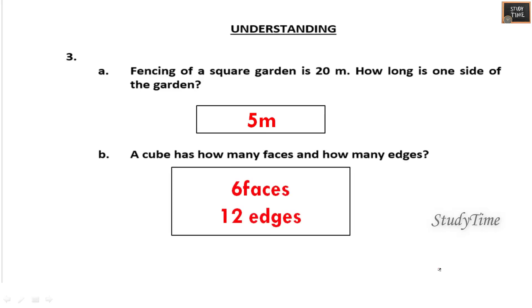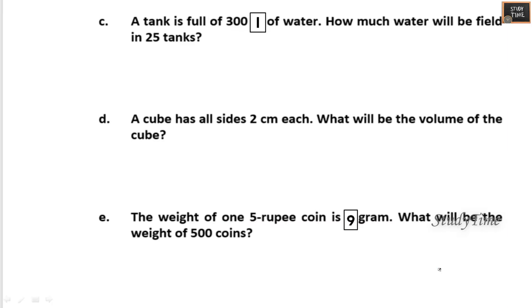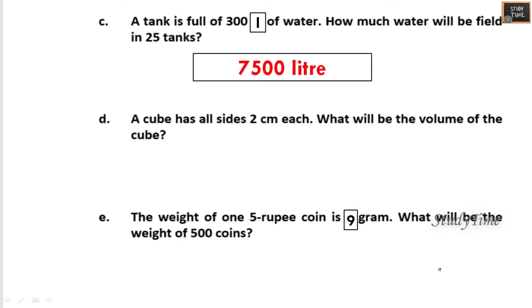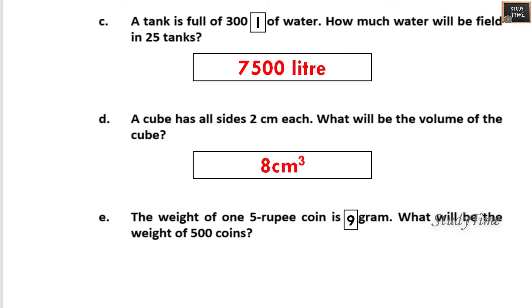A tank is full of 300 liters of water. How much water will be filled in 25 tanks? 25 into 300 is 7500 liters. A cube has all sides 2 centimeters each — what is the volume? Volume of a cube is side into side into side, that is 8 centimeter cube.